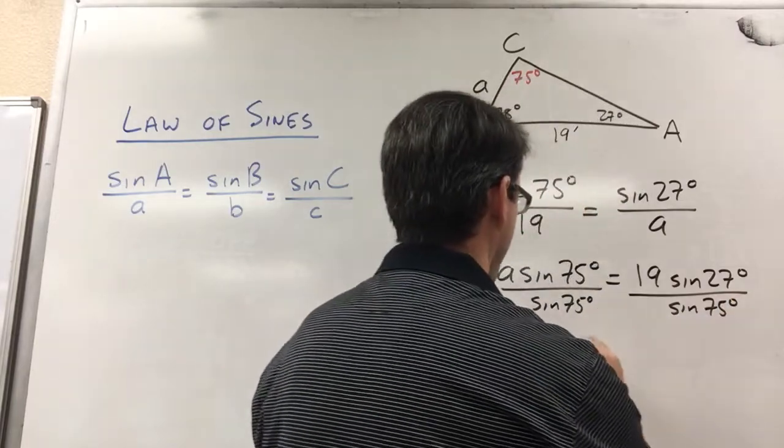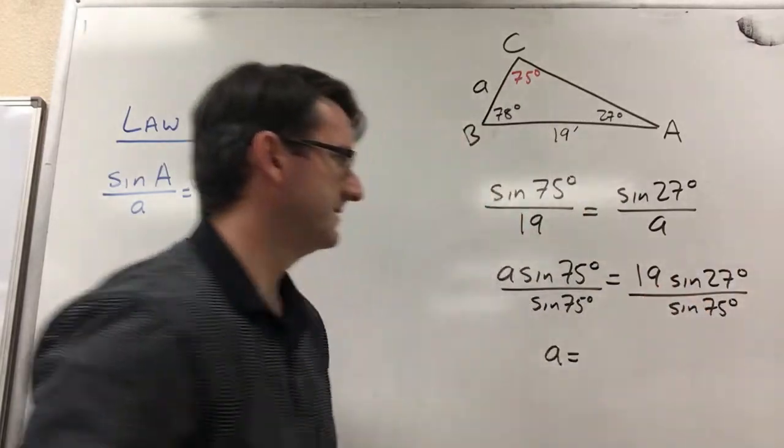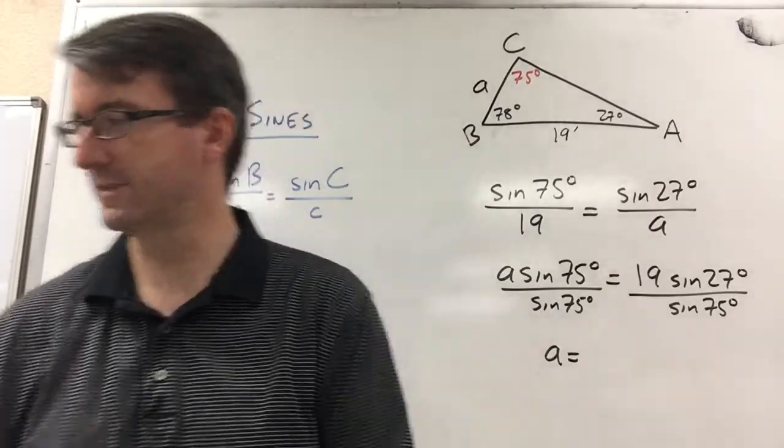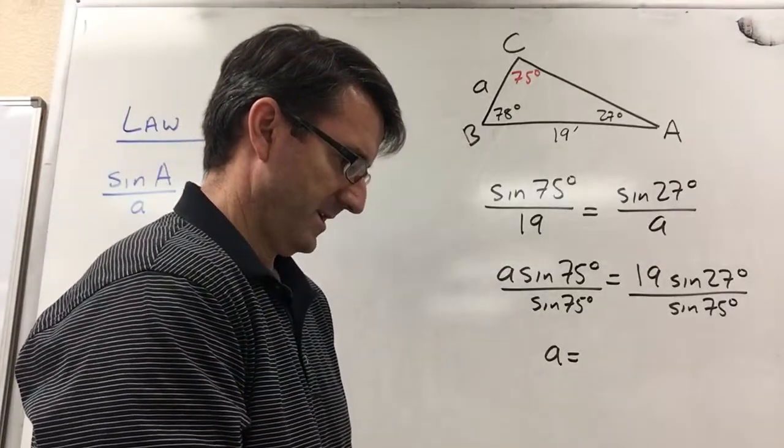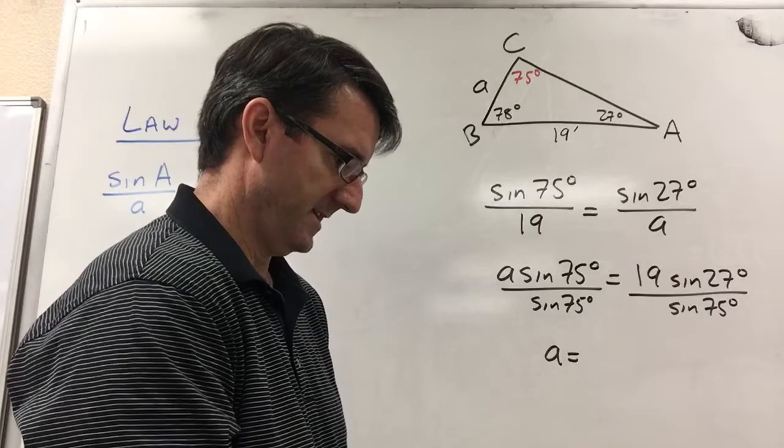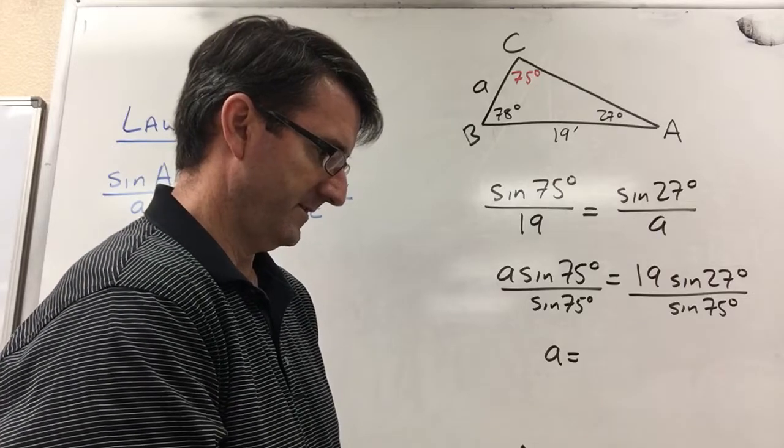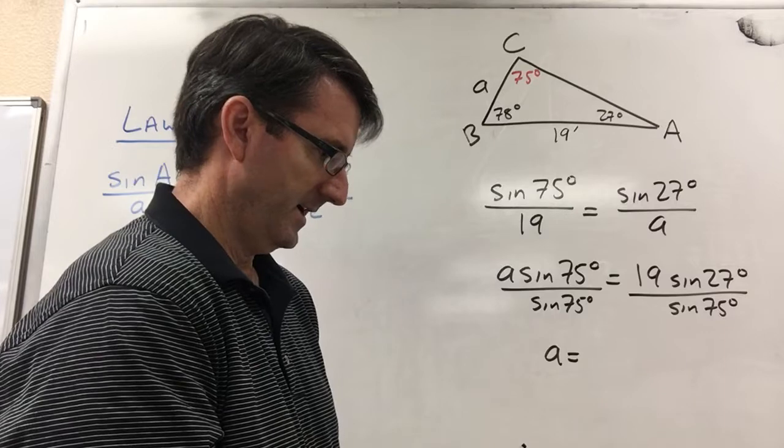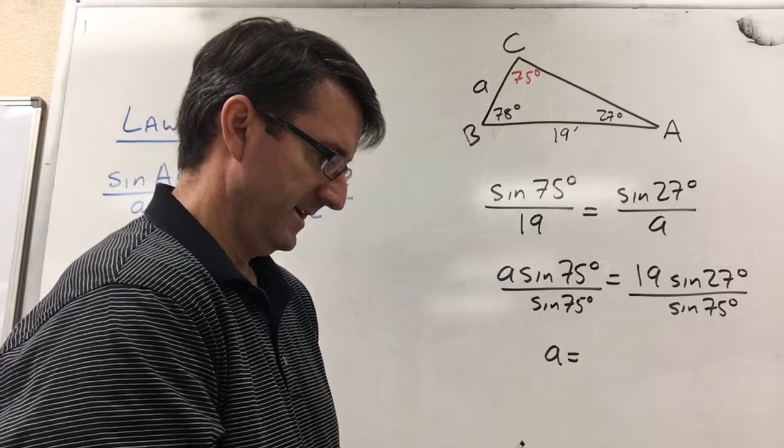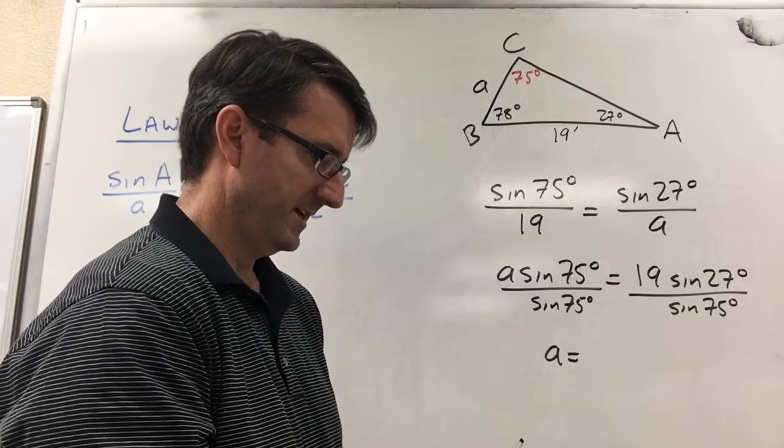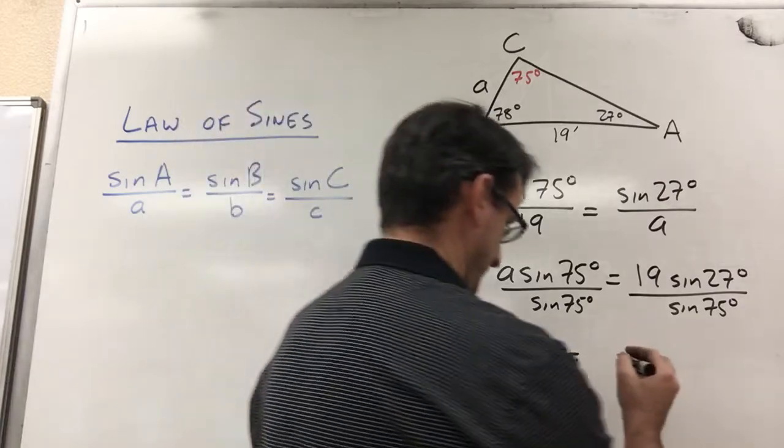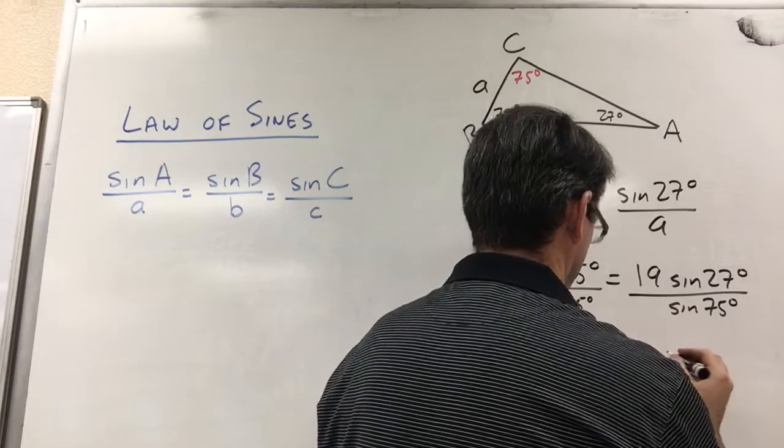And so A is equal to all of this, 19 times the sine of 27 degrees, divided by the sine of 75 degrees.